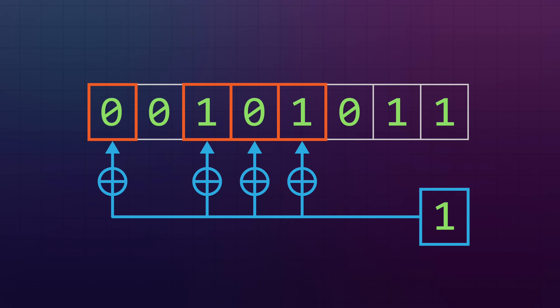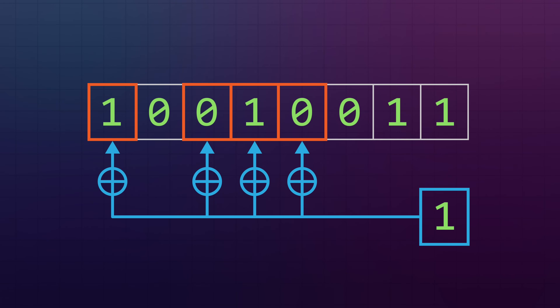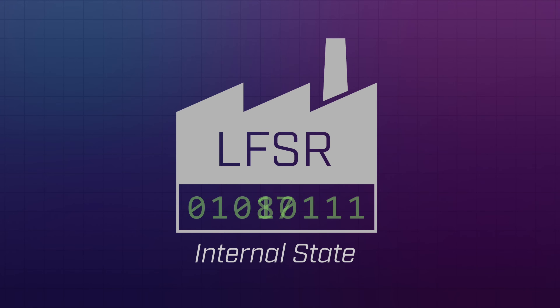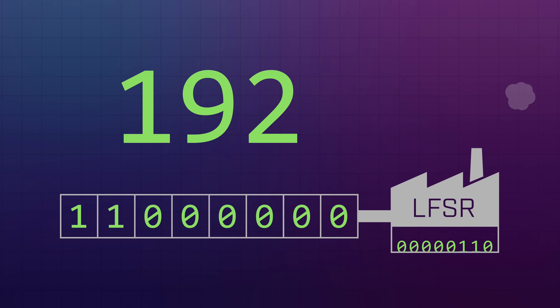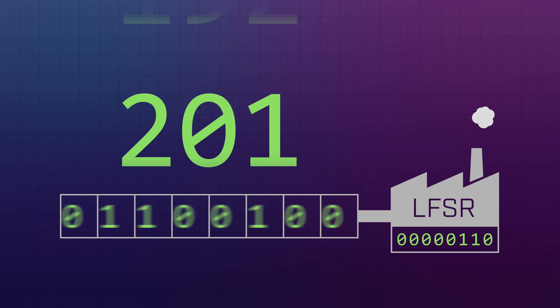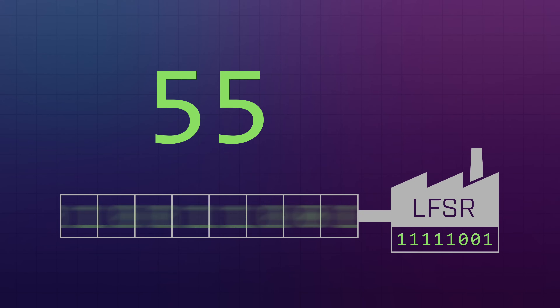But if the bit is one, as is the case with the number 87, then each of the bits are flipped, changing things dramatically. Every time you perform the process, you end up creating one random bit. So if you repeat it eight times, you can build a single 8-bit random number. If you start with the number 87, then the next number in the list will be 192. Repeating the process again gives you 201, then 55, 32, and so on. With an 8-bit random number generator like this one, you can create 255 high-quality random numbers until the pattern repeats.